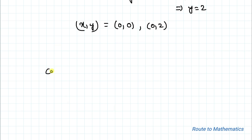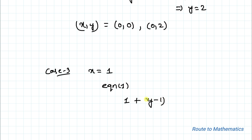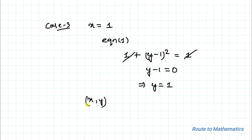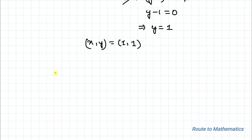In Case 3, for x equals 1, substituting into equation 1 gives 1 plus (y minus 1) squared equals 1. The 1s cancel, so (y minus 1) squared equals 0, which implies y equals 1. So here we have the solution (x, y) equals (1, 1).